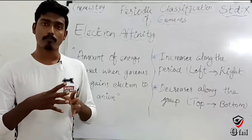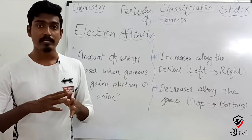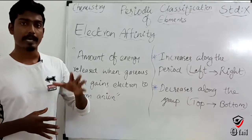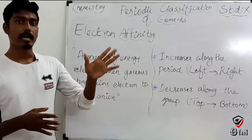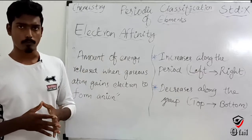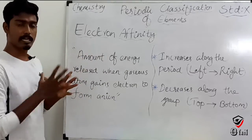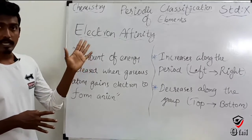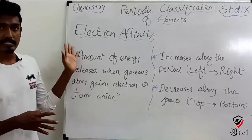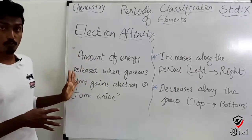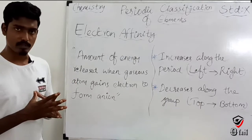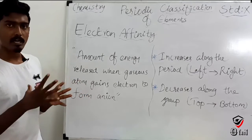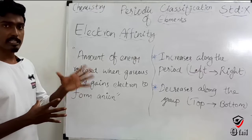Electron affinity is the amount of energy released when a gaseous atom gains an electron to form a negative ion. So the electron is gained by the neutral atom, and the energy is released.